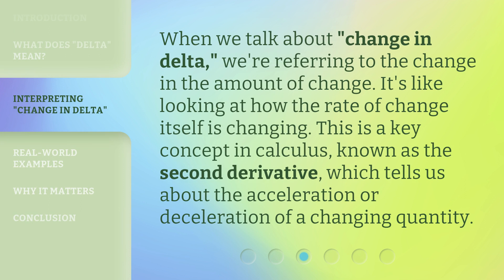When we talk about change in delta, we're referring to the change in the amount of change. It's like looking at how the rate of change itself is changing. This is a key concept in calculus, known as the second derivative, which tells us about the acceleration or deceleration of a changing quantity.